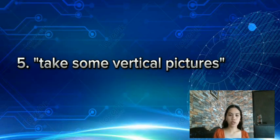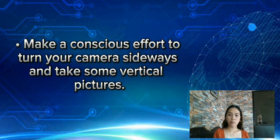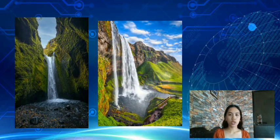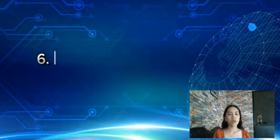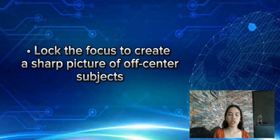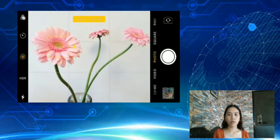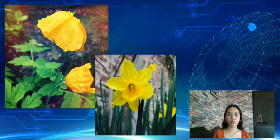Tip 5: Take some vertical pictures. All sorts of things look better in vertical pictures — from a lighthouse near a cliff to the Eiffel Tower to your young niece jumping in a puddle. Make a conscious effort to turn your camera sideways and take some vertical pictures. Tip 6: Lock the focus. If your subject is not in the center of the picture, you need to lock the focus to create a sharp picture, as most autofocus cameras focus on whatever is in the center.